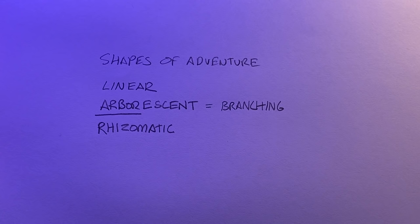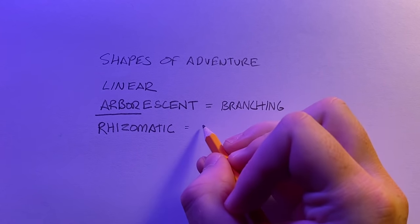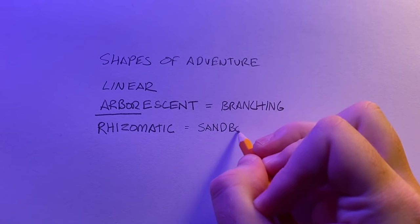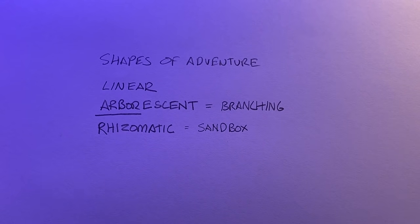Linear is like a line. Arborescent is like a tree. It's got that root word arbor in it, so it branches out and then it trunks back in. And then a rhizomatic adventure is like a sandbox. It's basically anything where player choice is at an abundance.